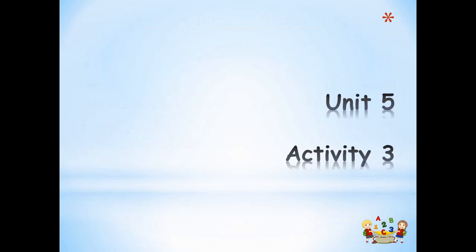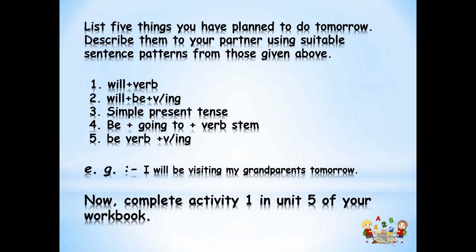Now let's look at the activity — Unit 5, Activity 3. List 5 things you have planned to do tomorrow and describe them to your partner using suitable sentence patterns from those given above. Children, we have learnt 5 structures: will plus verb; will plus be plus present participle (verb -ing form); simple present tense; be plus going to plus verb stem; and be verb plus present participle. Make one sentence for each structure, so you can make 5 sentences.